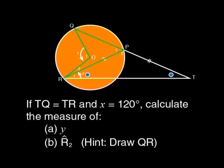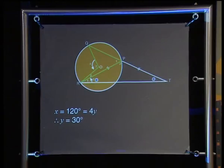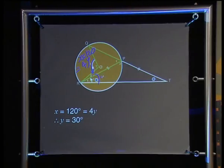Part three of the question asks: if TQ equals TR and X equals 120 degrees, calculate the measure of Y and the measure of R2. The measure of an angle is its actual size in numbers. We already know X is four times Y, so if X is 120 degrees, Y will be 120 divided by four, which is 30 degrees.